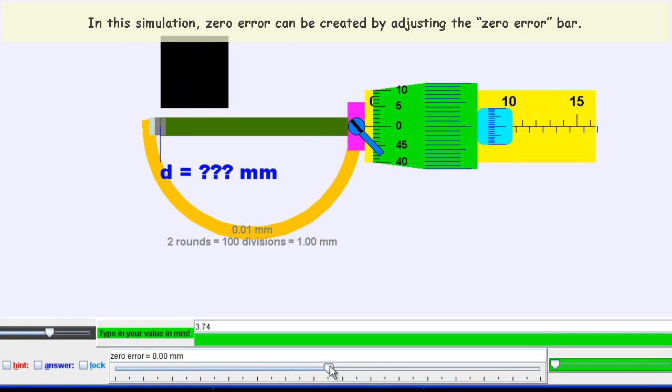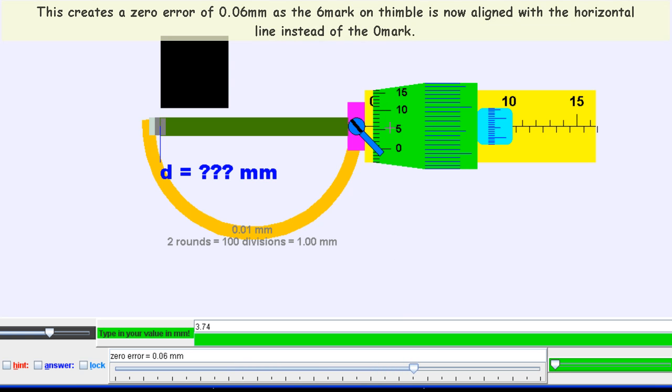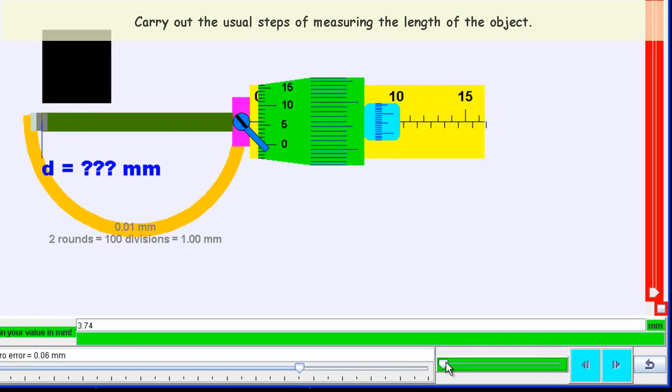Now you can actually create a fictitious zero error. If you're interested in exploring a zero error, just change it to, let's say for example, 0.06 mm. You will find that the micrometer will have a reading of 0.06 mm even when the jaws are perfectly closed.